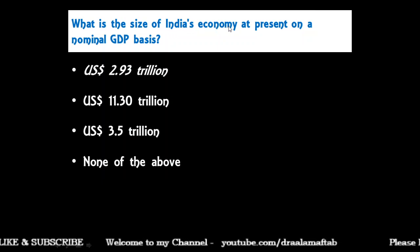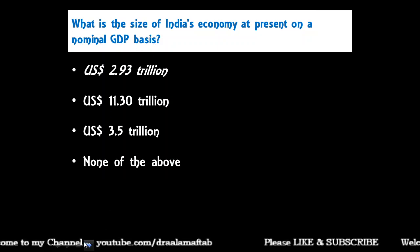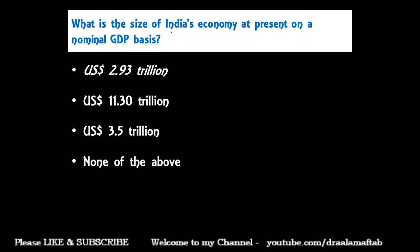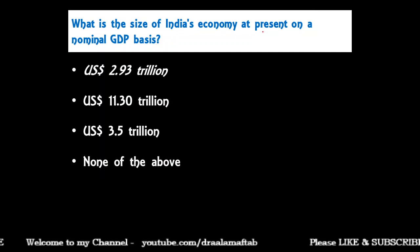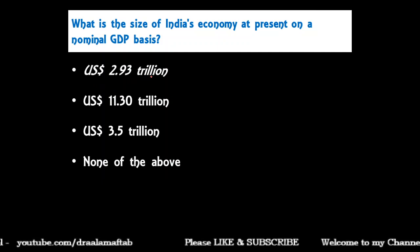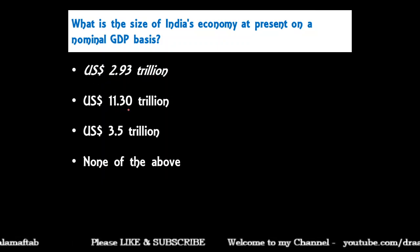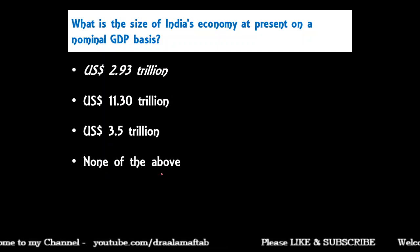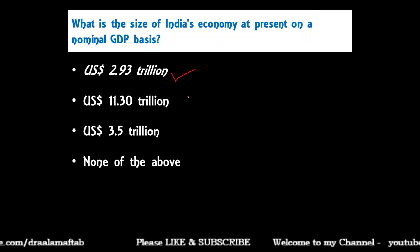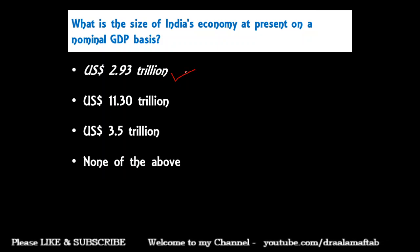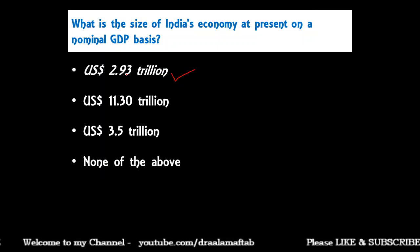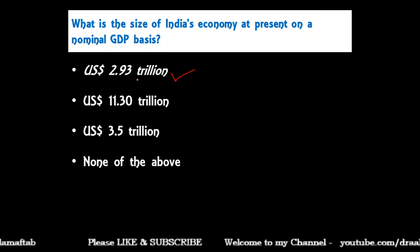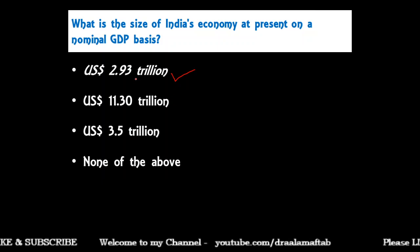Next question: What is the size of India's economy at present on a nominal GDP basis? The options are: 2.93 trillion US dollar, 11.30 trillion US dollar, 3.5 trillion US dollar, or none of the above. The correct answer is 2.93 trillion. This data is from the IMF report 2019, whereas the earlier questions used World Bank data.